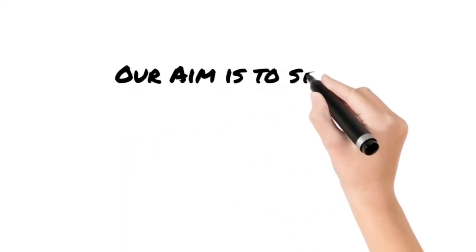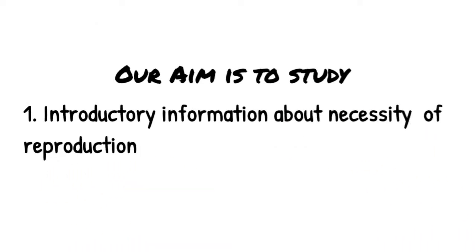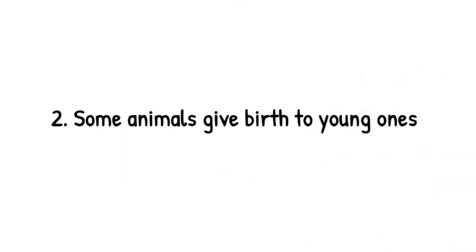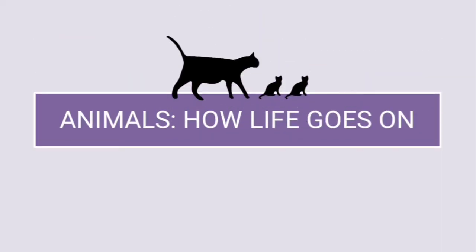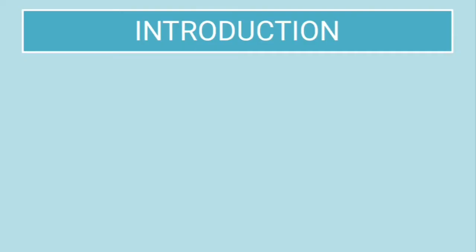Students, our aim is to study the introductory information about the necessity of reproduction, and then to know about the animals that give birth to young ones. So this is our aim. To start with the chapter — Animal: How Life Goes On — we will be learning about the introductory part and how some animals give birth to young ones. So let us start.